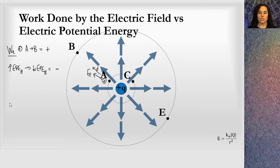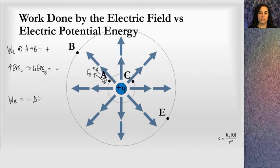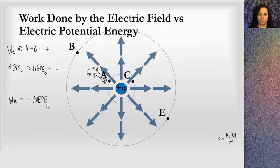So we get this relationship: the work done by the electric field equals negative the change in the electric potential energy. If the electric field is doing work, the charge is losing potential energy.